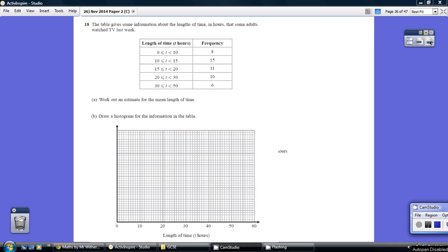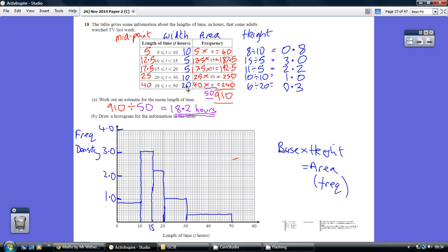Okay, question 18, part A: work out an estimate for the mean length of time. So, 8 adults watch TV for between 0 and 10 hours.